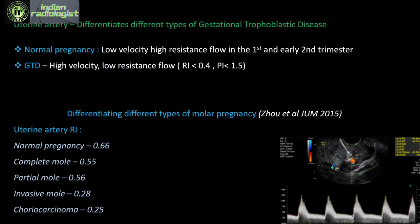Uterine artery Doppler, though underutilized, helps differentiate types of gestational trophoblastic disease. In normal pregnancy, the first and second trimesters show low velocity, high resistance flow. In gestational trophoblastic disease, the reverse pattern is seen: high velocity and low resistance flow. In normal pregnancy the uterine artery RI averages 0.66 (per Zoho et al.). In complete and partial mole, RI is in the range of 0.55–0.56. In malignant disease, resistance is very low, as low as 0.25–0.3. Always assess the uterine artery waveform and values when encountering gestational trophoblastic disease.